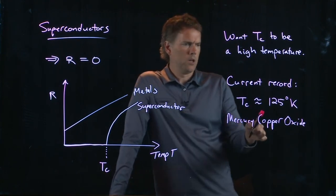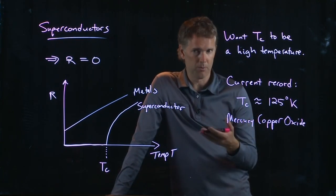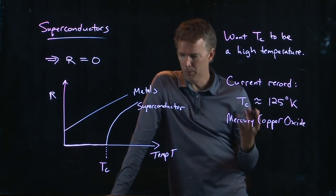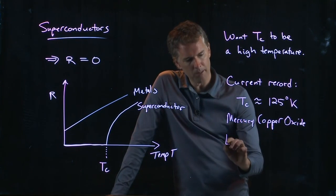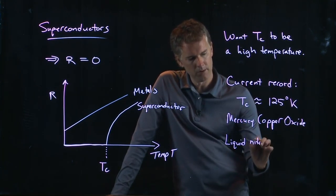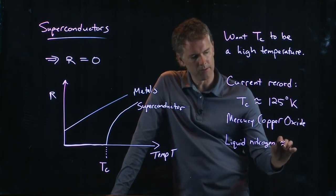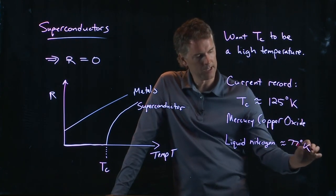Which, 125 Kelvin, that sounds a little cold still, right? Because room temperature is like 300 Kelvin. But the point is, it is well above the temperature for liquid nitrogen. Liquid nitrogen is about 77 degrees Kelvin.